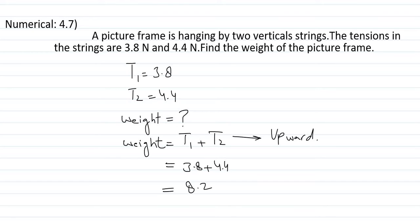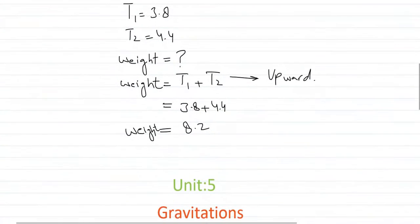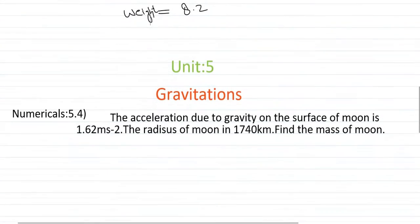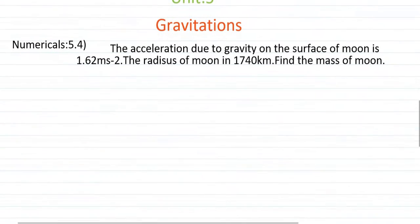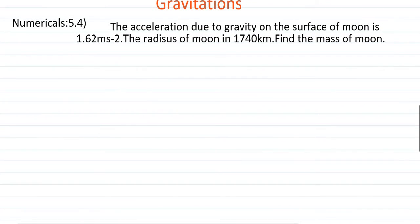You have to write these numericals in your classwork registers of physics. Now we are solving unit number 5, which is gravitation short syllabus numericals. There are only two numericals: 5.4 and 5.9.